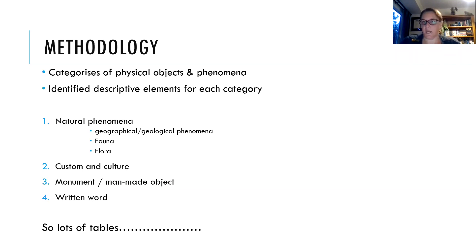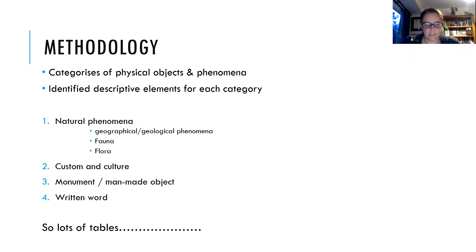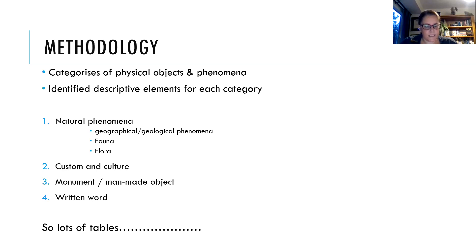A couple of examples: for natural phenomena — fauna — the descriptive elements are basically physical appearance, behaviour, breeding habits, burial practices, and sacred status. For man-made objects, the elements tend to be location, shape, size, what it's made of, how it's made, when it was made, made by whom, and any specific design features. Occasionally there are some additional descriptors, which I'll talk a little more about later.